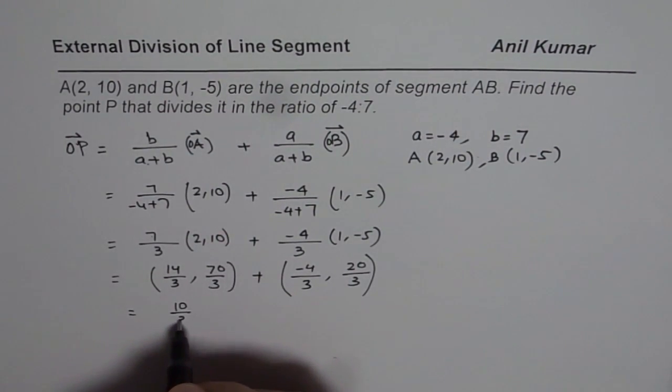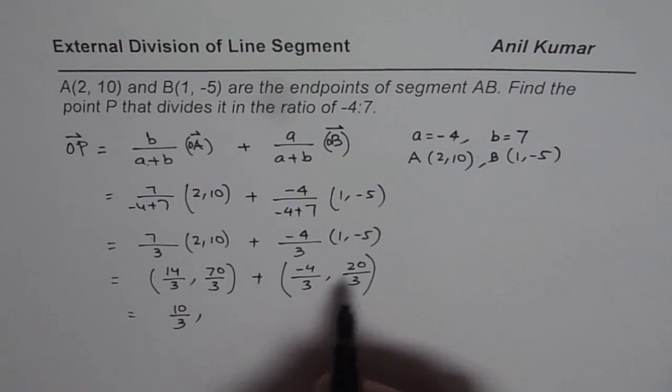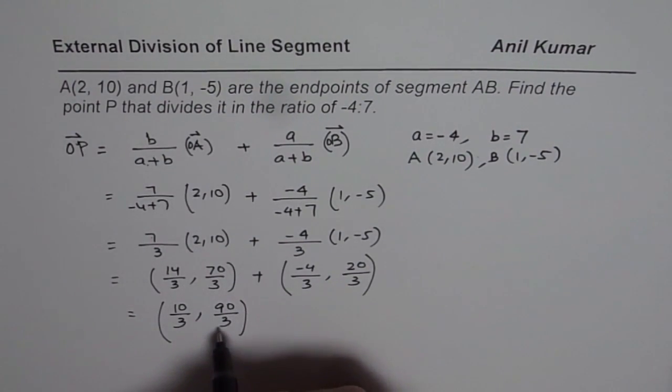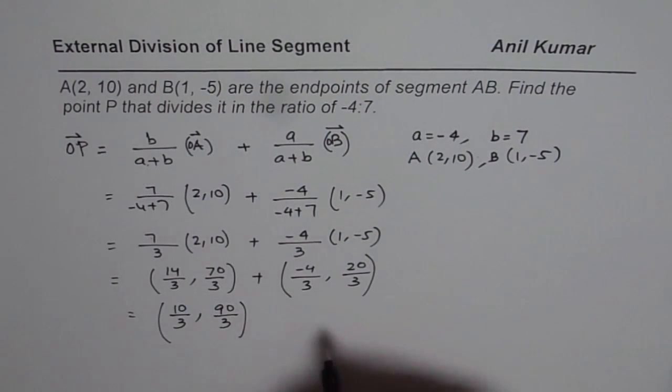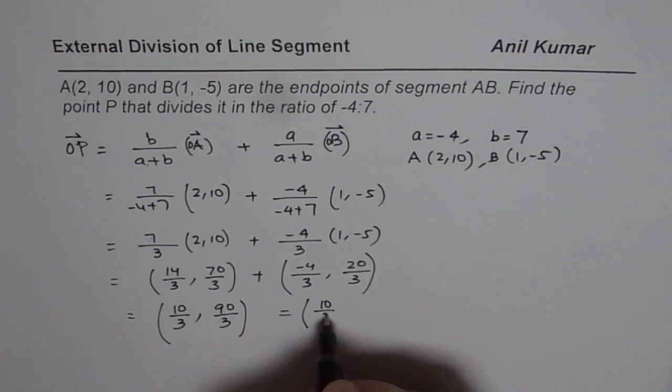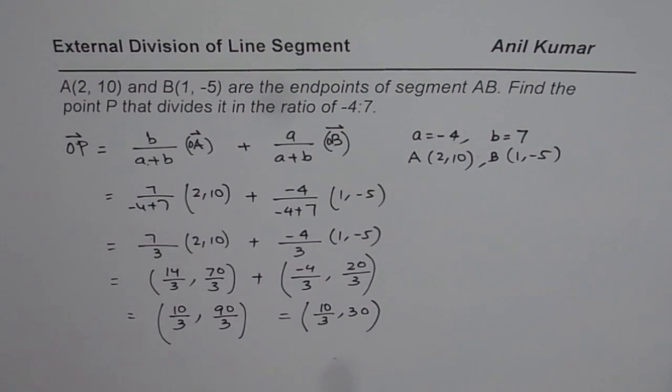So 14 minus 4 is 10. So you get 10 over 3 as the x value of point P, and 70 plus 20 is 90. So 90 over 3 as the y coordinate. You can simplify this and write it as 10 over 3 and 30. So that becomes the coordinate points of P.